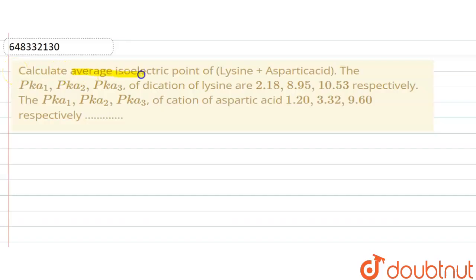Calculate average isoelectric point of lysine plus aspartic acid. The pKa1, pKa2, pKa3 of dications of lysine are 2.18, 8.95, 10.53 respectively. The pKa1, pKa2, pKa3 of cation of aspartic acid are 1.20, 3.32, 9.60 respectively.